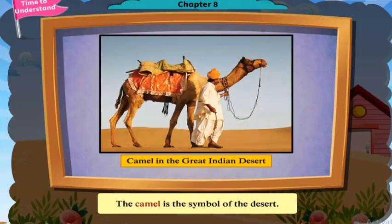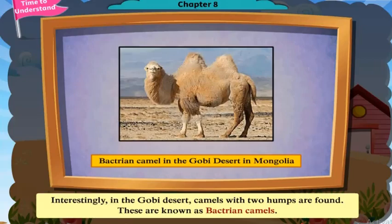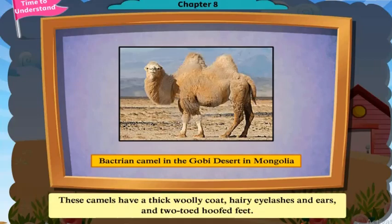The camel is the symbol of the desert. Interestingly, in the Gobi Desert, camels with two humps are found. These are known as Bactrian camels. These camels have a thick woolly coat, hairy eyelashes and ears, and two-toed hoofed feet.